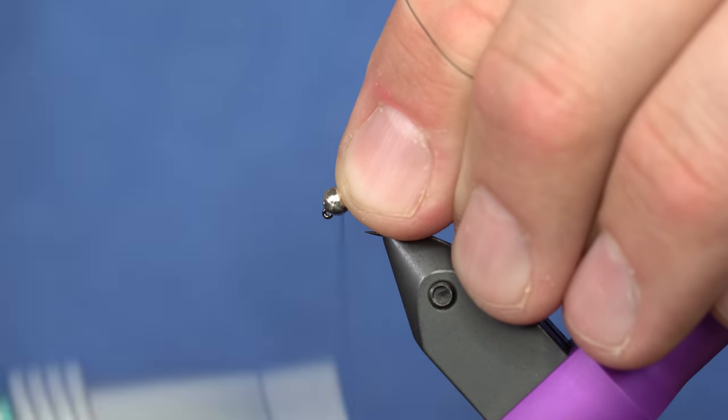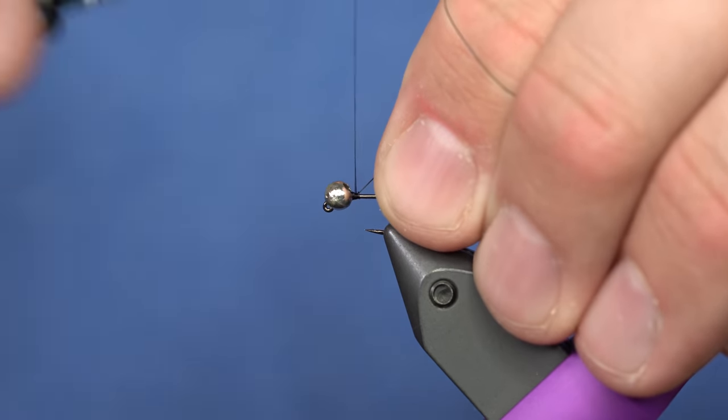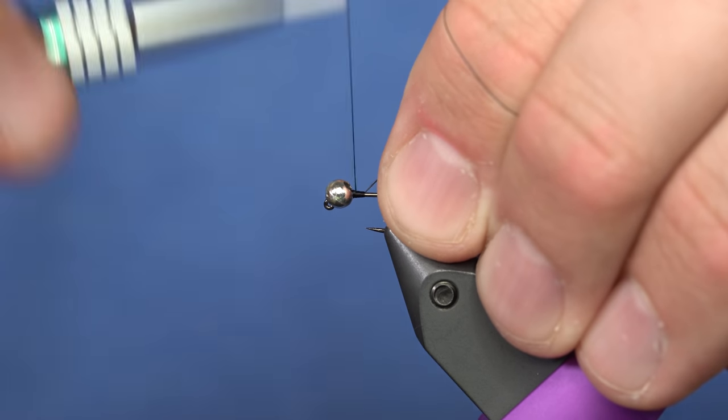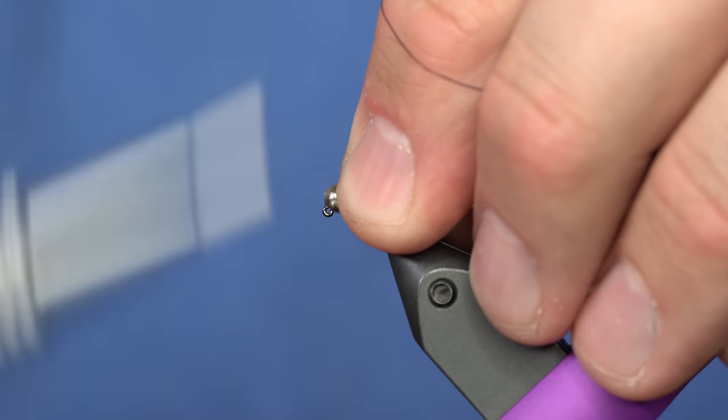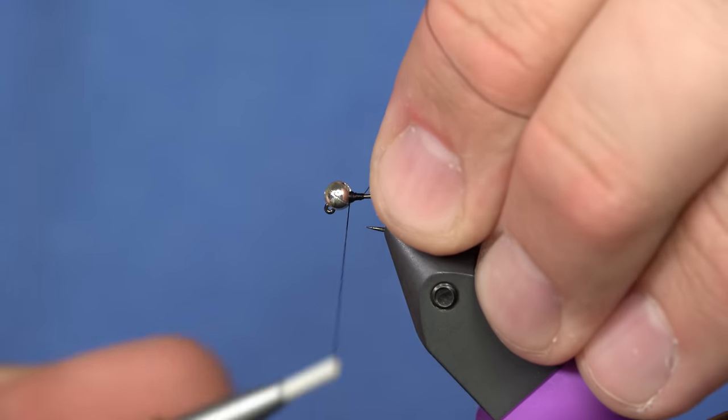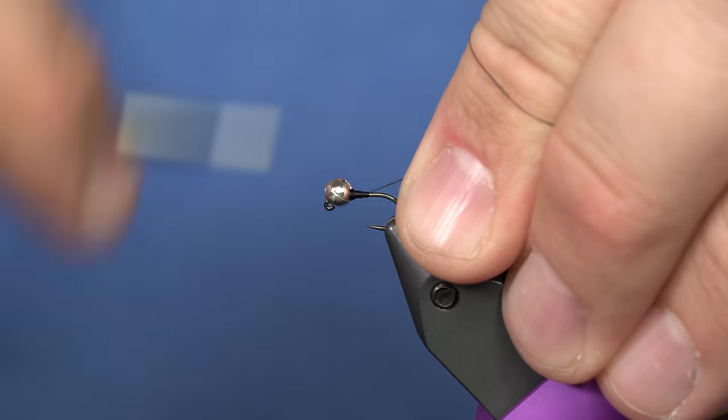It's also important to note that the bead size on a jig hook doesn't necessarily match up exactly every single time. It's important to tie maybe this same size fly with a smaller bead as well for skinnier water.